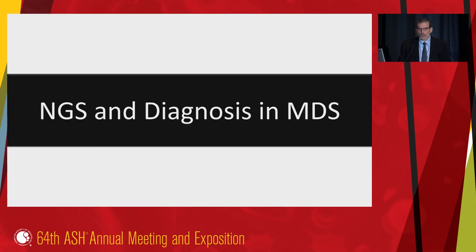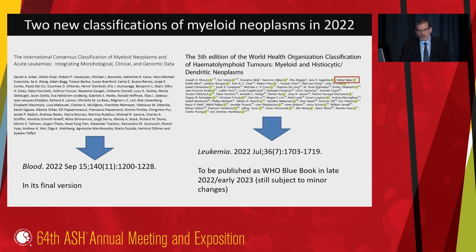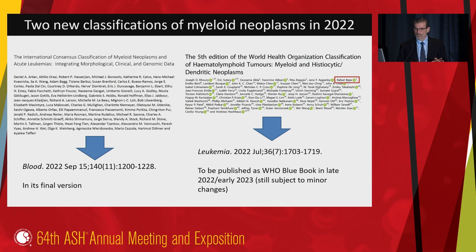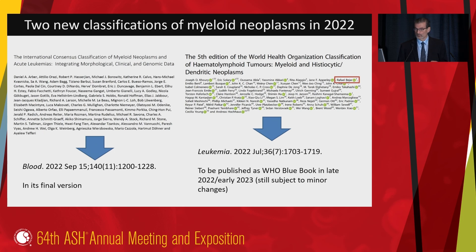What about using NGS as a diagnostic tool? We have two new classification schemes that came out this year: one from the International Consensus Classification published in Blood, and the other the fifth edition of the WHO classification scheme published in Leukemia. While they have a lot of overlap, there are some differences, but both move toward a more molecular definition of disease for MDS and other myeloid disorders.